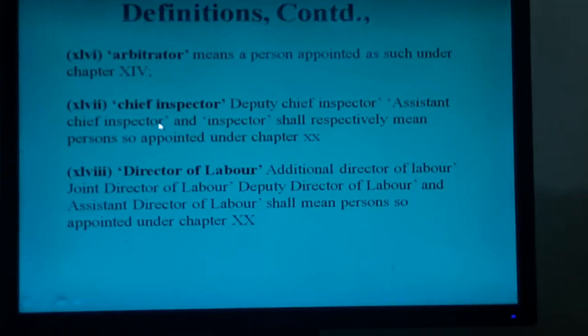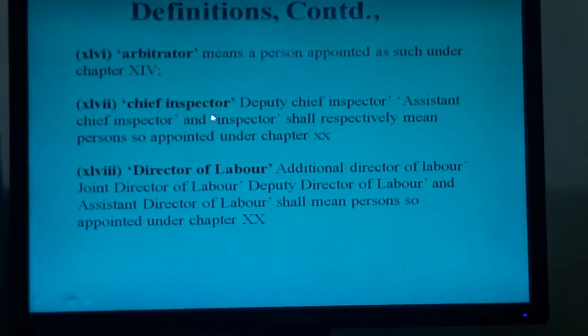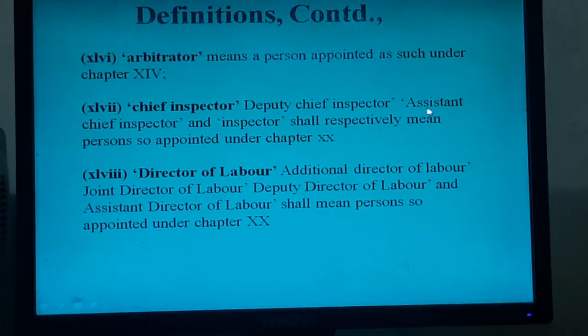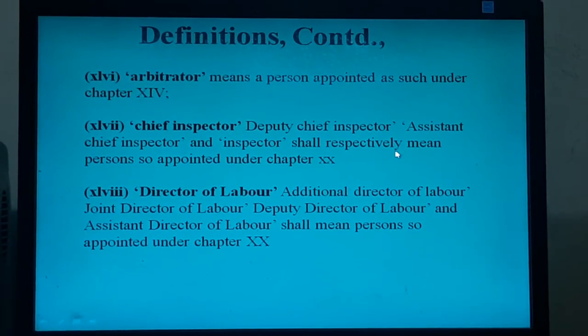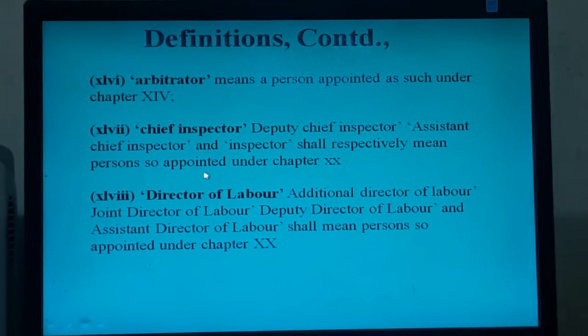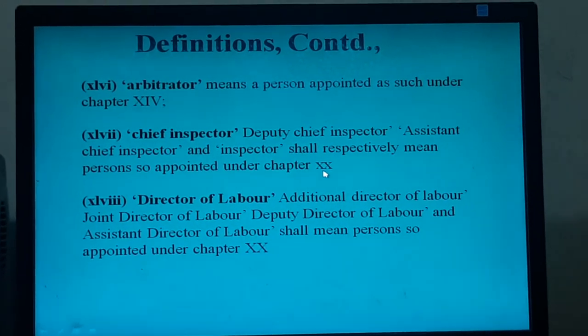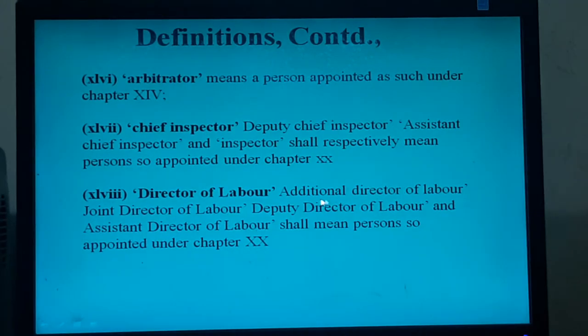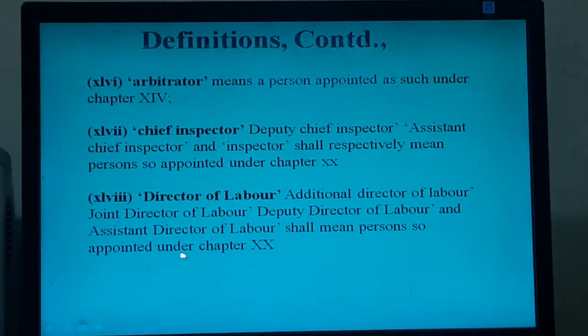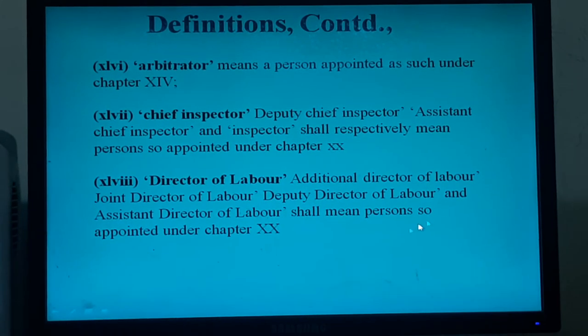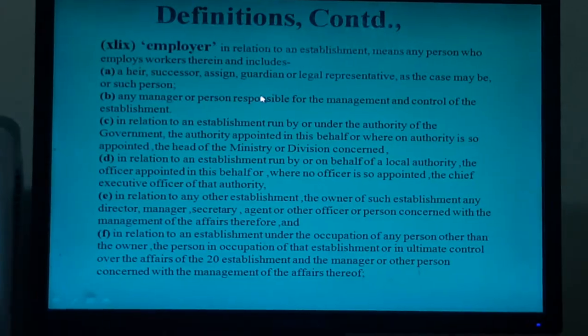Arbitrator is a person who is appointed unanimously by both the conflicting parties. Chief Inspector, Deputy Chief Inspector, Assistant Chief Inspector and Inspector shall respectively mean persons appointed under Chapter 20. Director of Labour, Additional Director of Labour, Joint Director of Labour, Deputy Director of Labour and Assistant Director of Labour shall mean persons appointed under Chapter 20.